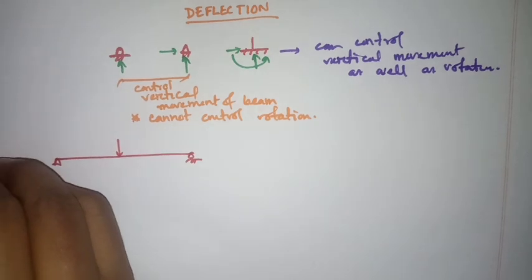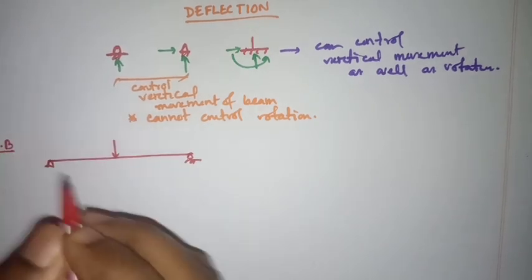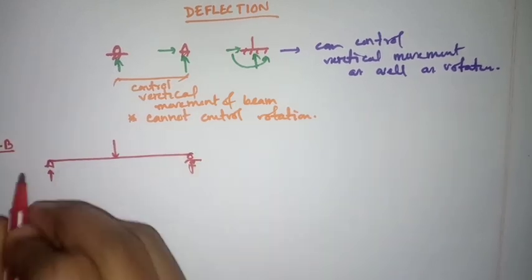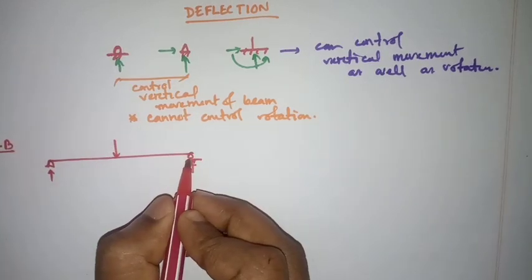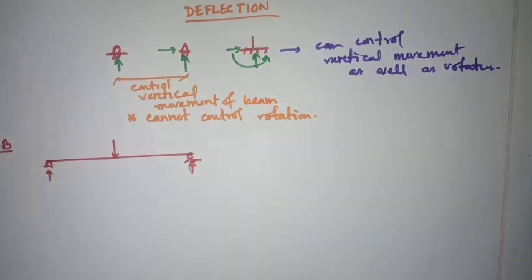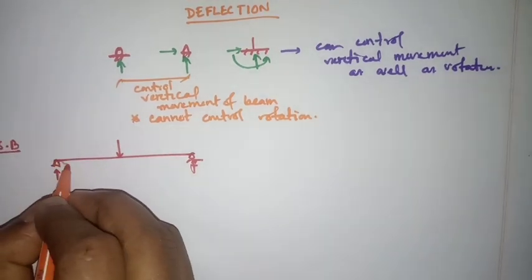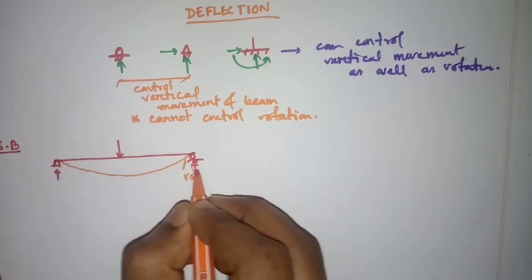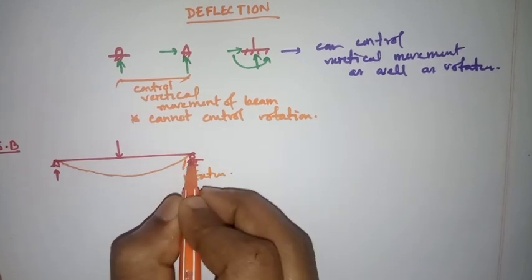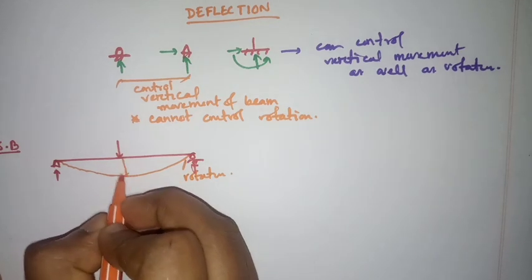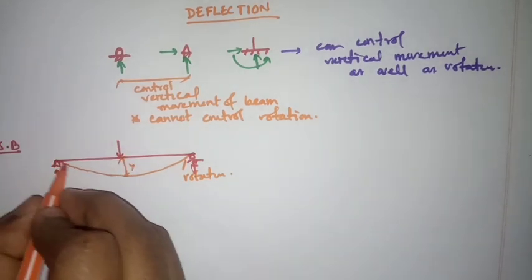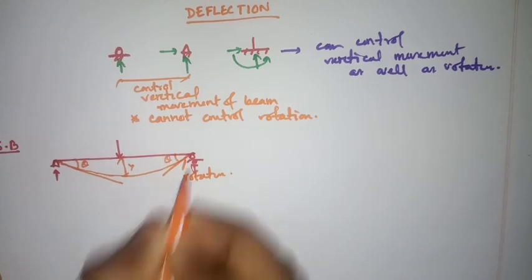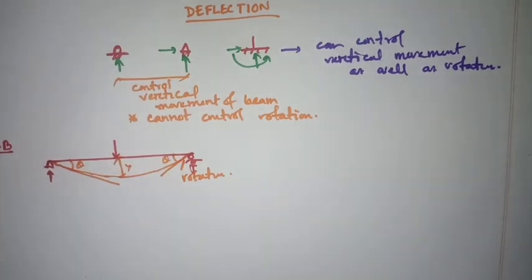If I draw a simply supported beam with loading, here is one reaction and here is another reaction. These two reactions remove the vertical movement, and an elastic curve will be developed. At the supports there is rotation but no deflection, and at mid-span there is deflection. The slope angle theta represents the rotation.